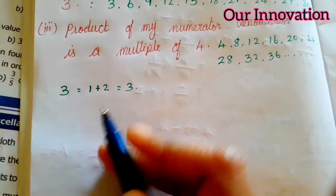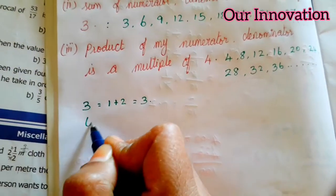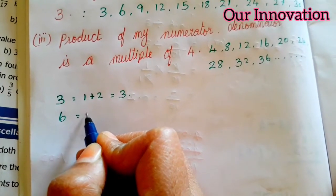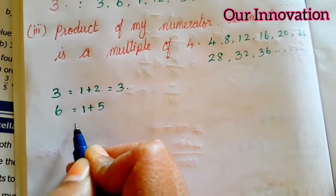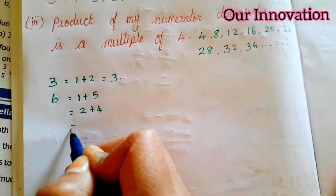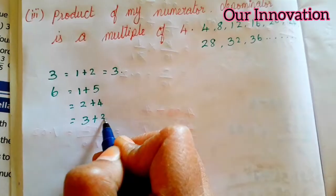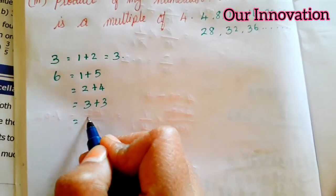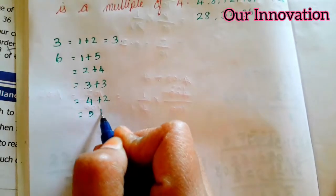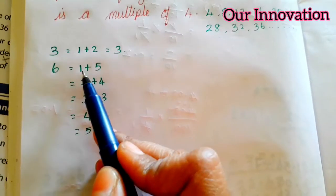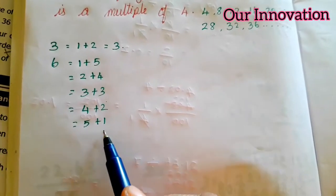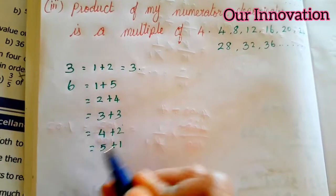So 1 plus 2 is equal to 3. Students, where are the cheap possibilities? Next, the number equal to 6. Now we add 6: 1 plus 5, 2 plus 4, 3 plus 3, 4 plus 2, 5 plus 1. So 1+5=6, 2+4=6, 3+3=6, 4+2=6, 5+1=6.